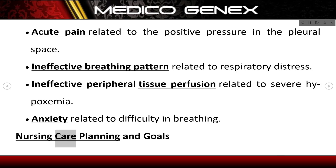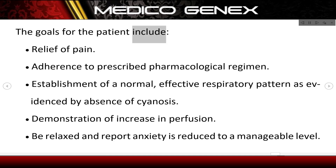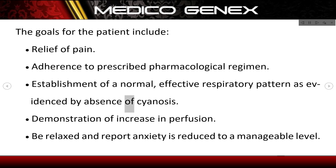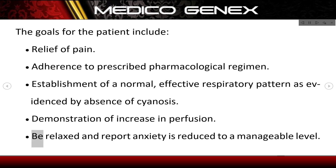Nursing care planning and goals. The goals for the patient include: relief of pain; adherence to prescribed pharmacological regimen; establishment of a normal, effective respiratory pattern as evidenced by absence of cyanosis; demonstration of increase in perfusion; and that the patient is relaxed and reports anxiety is reduced to a manageable level.